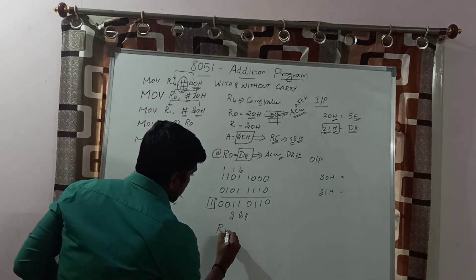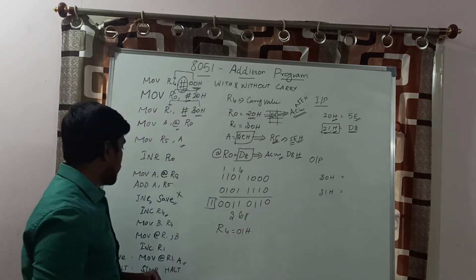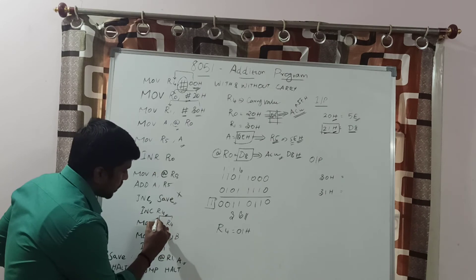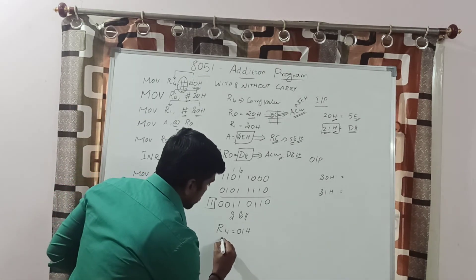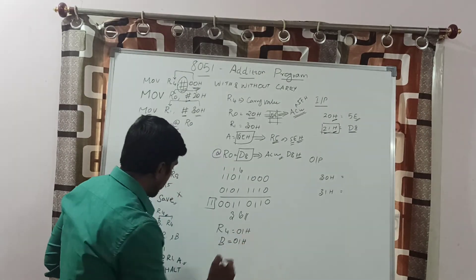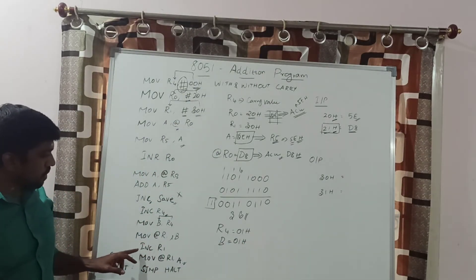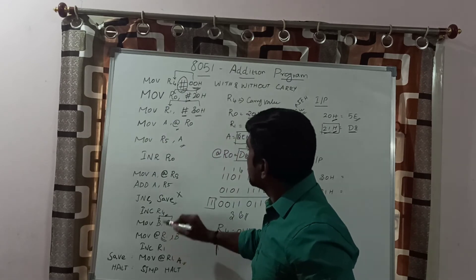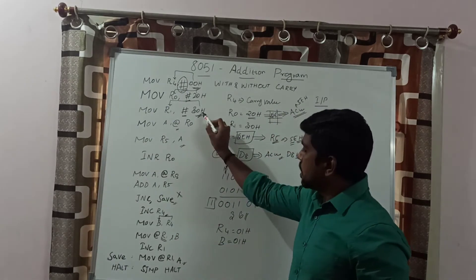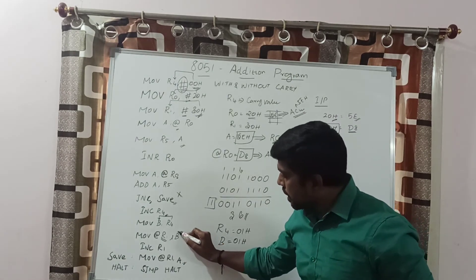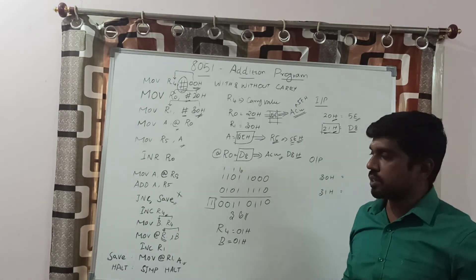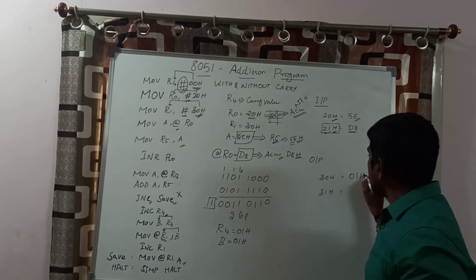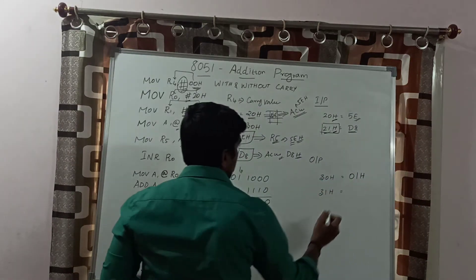The next instruction is INC R4 — before execution, R4 value is 00H; after incrementing, R4 content becomes 01H. Then MOV B, R4 — whatever value is present in R4 is transferred to the B register. After execution, B register content is 01H. Then the instruction MOV @R1, B stores whatever value is in the B register into the memory location held by R1, which is 30H. So memory location 30H now holds 01H — this is the carry value.